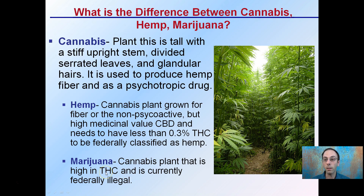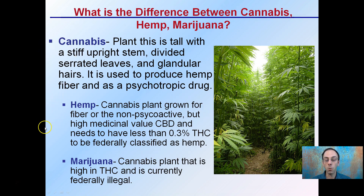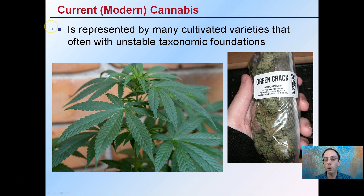THC is the psychoactive cannabinoid associated with the typical cannabis or marijuana high. Hemp is that less than 0.3% THC plant, typically grown for its fiber or its medicinal CBD value. So hemp and marijuana are both classified under cannabis, and hemp is going to be by far our focus here. Modern cannabis is represented by many cultivated varieties that are often on unstable taxonomic foundations.